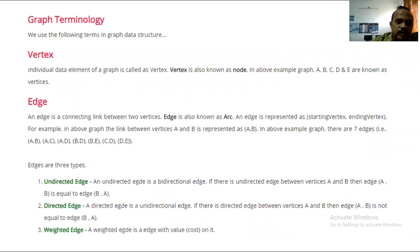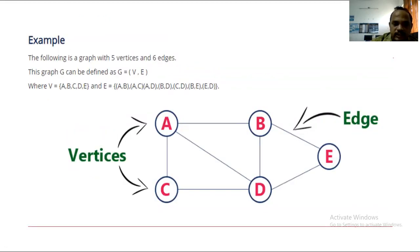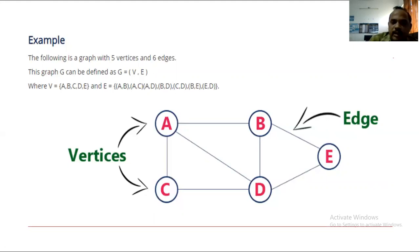Graph terminologies: a vertex is an individual data element of a graph, also known as a node. In the above example, A, B, C, D, E are the vertices. An edge is a link between two nodes. In this example there are seven edges: A-B, A-C, A-D, B-D, C-D, B-E, and E-D — seven edges total, five nodes.